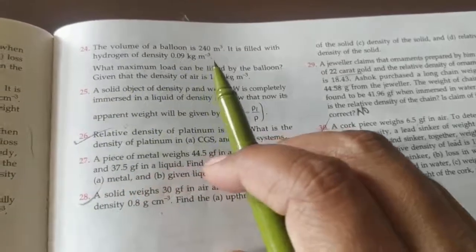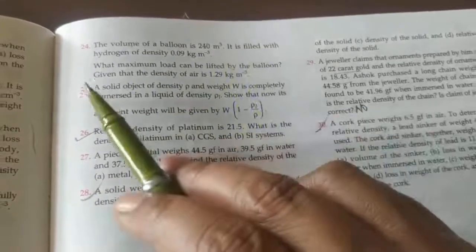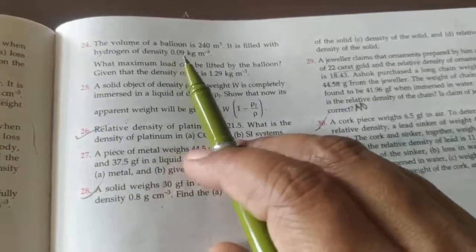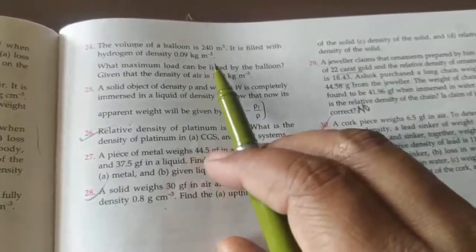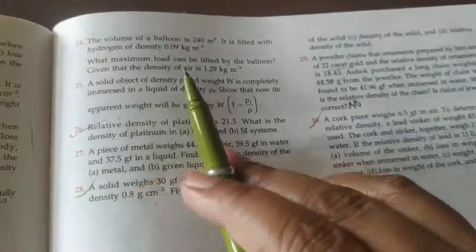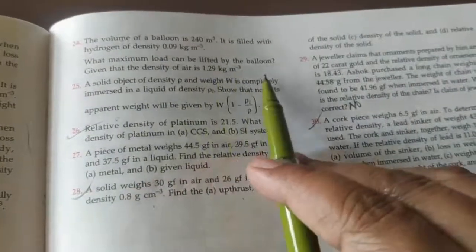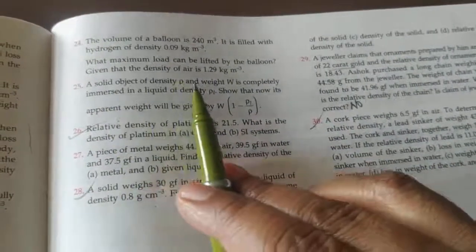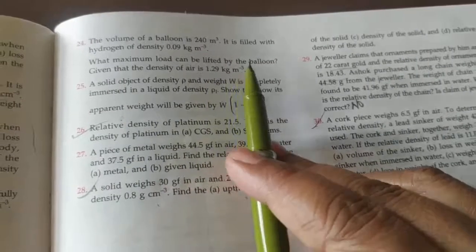The volume of a balloon is 240 meter cube, it is filled with hydrogen of density 0.09 kg per meter inverse 3. What maximum load can be lifted by the balloon, given that the density of air is 1.29 kg per meter inverse 3?